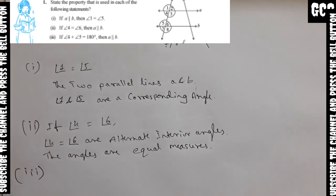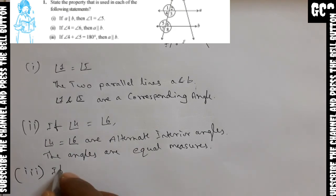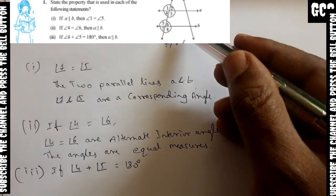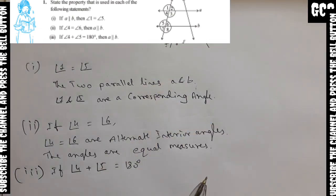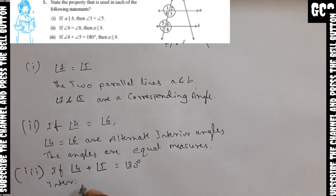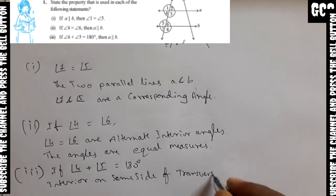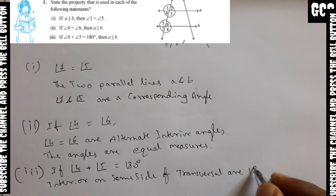Third statement: if angle 4 plus angle 5 equals 180 degrees. Look at the picture — angle 4 and angle 5 are interior angles on the same side of the transversal. Interior angles on the same side of the transversal always add up to 180 degrees.